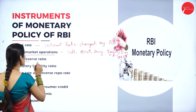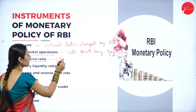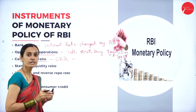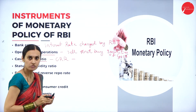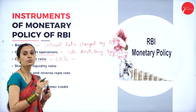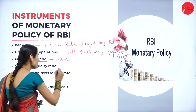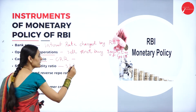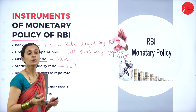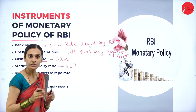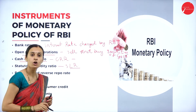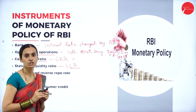The next instrument is cash reserve ratio, CRR. Every commercial bank has to maintain some amount of its total deposits in the form of cash reserves — this is called the cash reserve ratio. Next is statutory liquidity ratio, SLR. All commercial banks have to reserve some amount of total deposits in the form of liquid assets — this is called the statutory liquidity ratio.